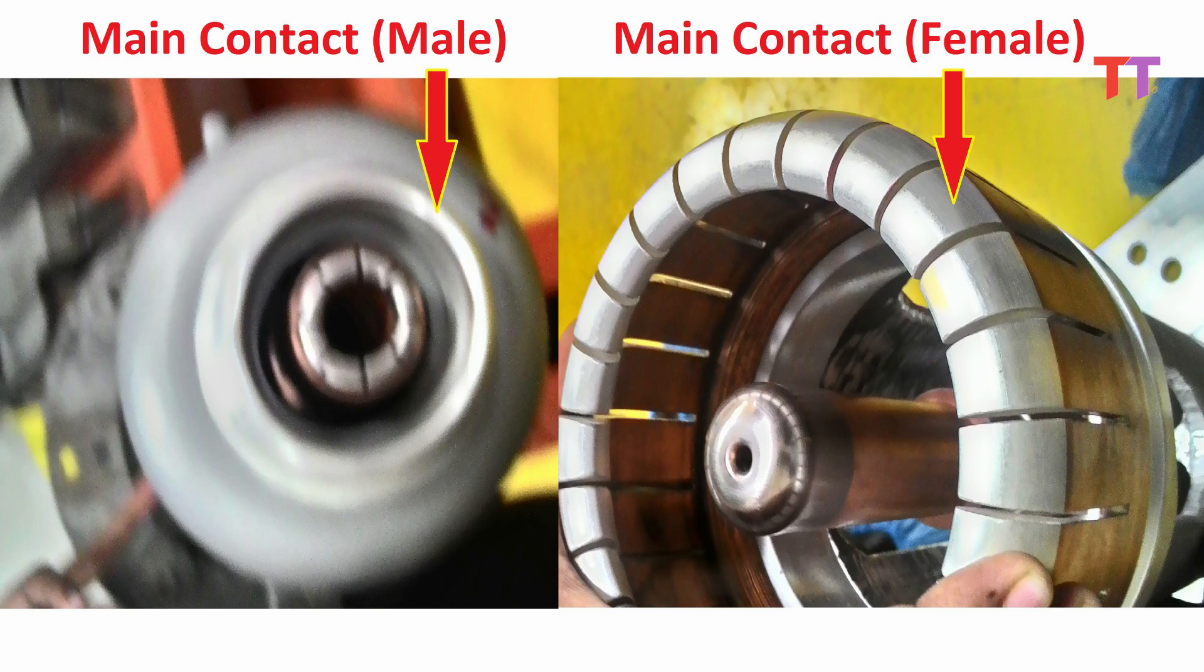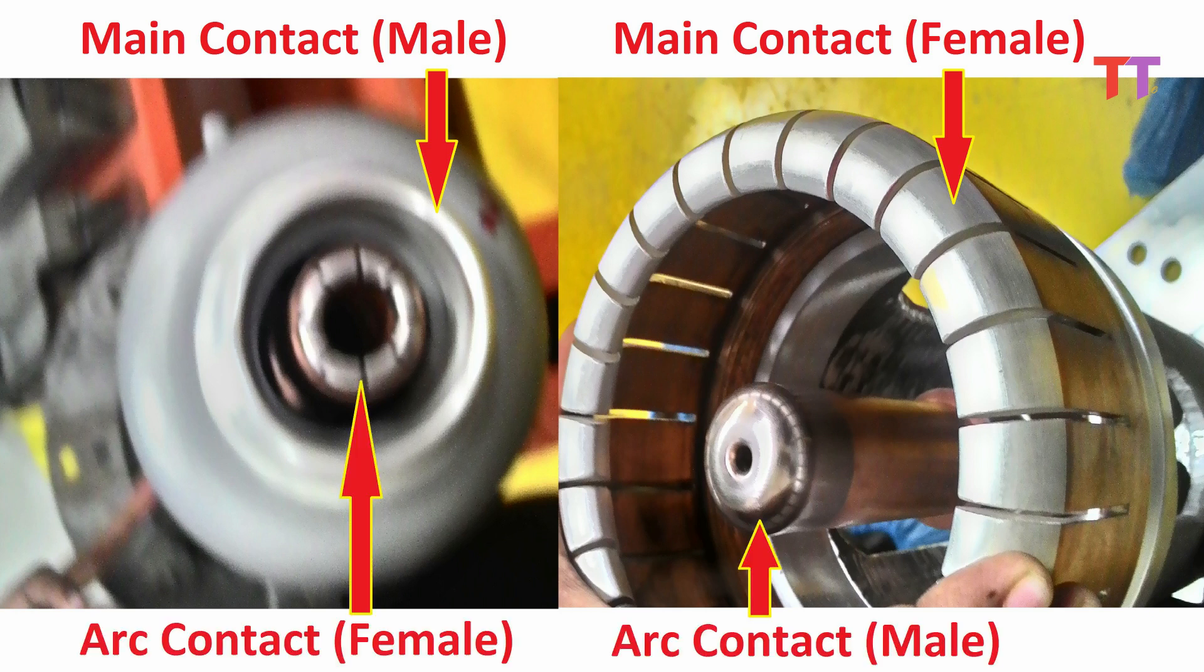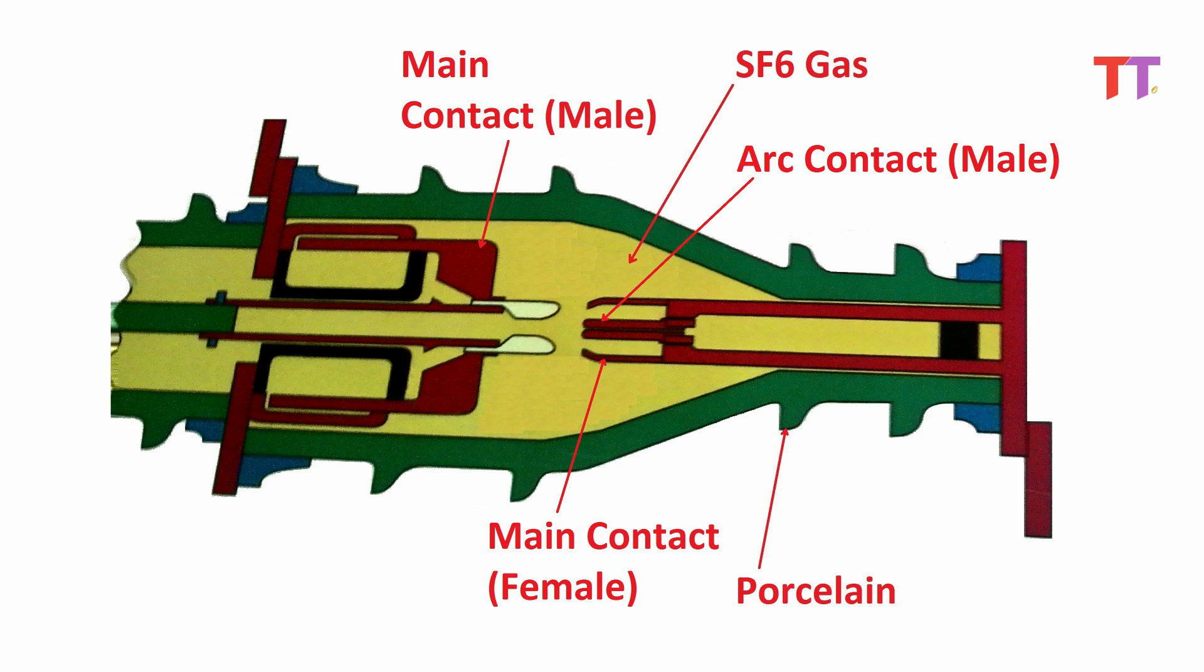This is how these two contacts look like. If we look closely we can see there are two more contacts relatively smaller. These contacts are called as arc contacts. This one is male arc contact which is fixed and this other one is female arc contact which is moving.